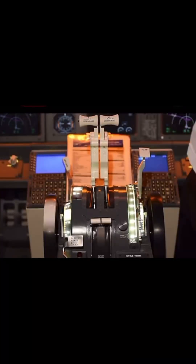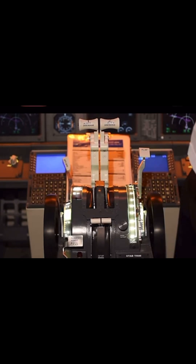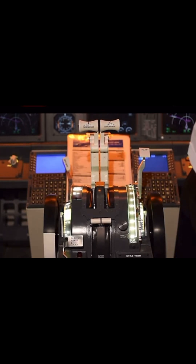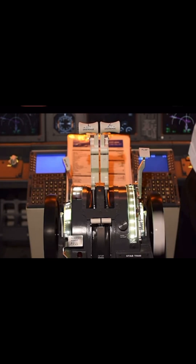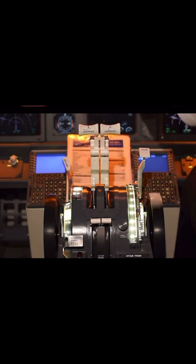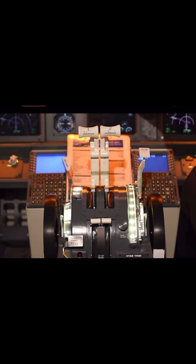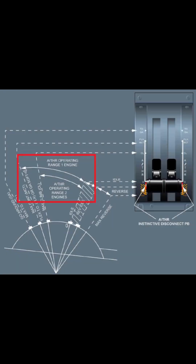On Boeing aircraft — let's look at the 737 in particular — they have motorized thrust levers. As the FADEC makes adjustments, you can see the thrust levers moving as per the settings being done by the Full Authority Digital Engine Control, the FADEC system.